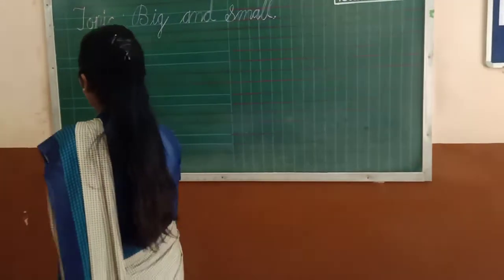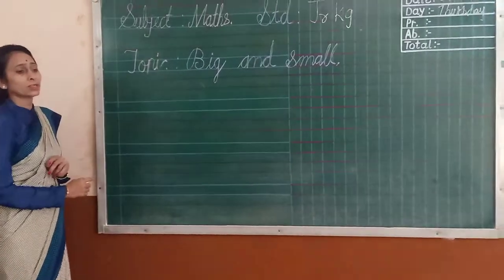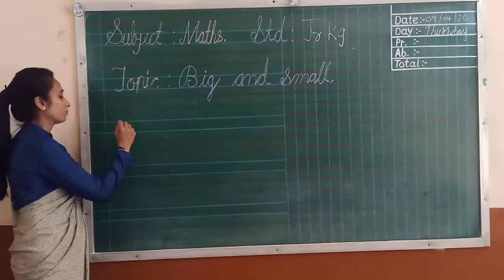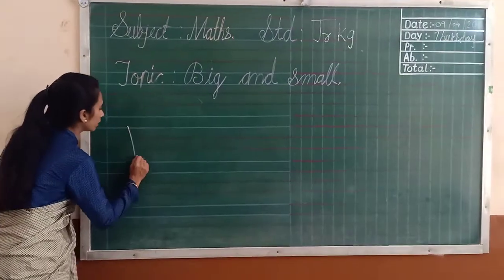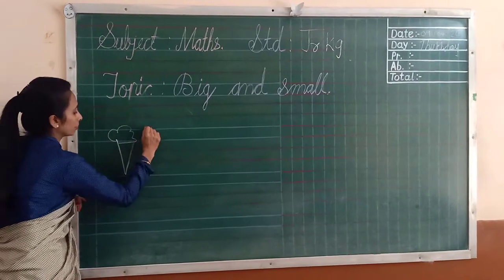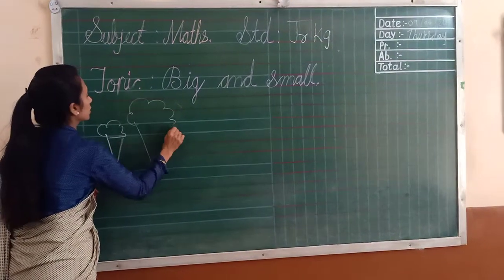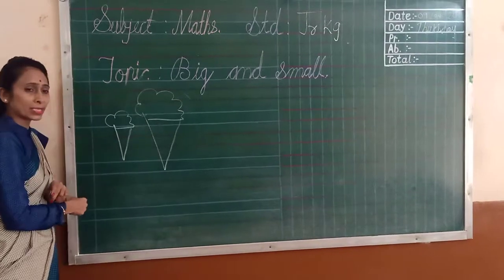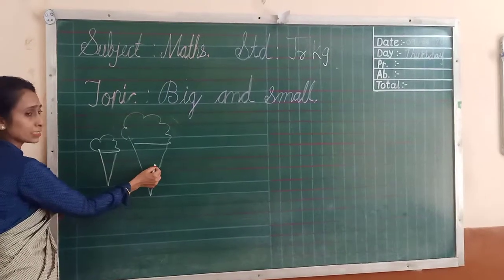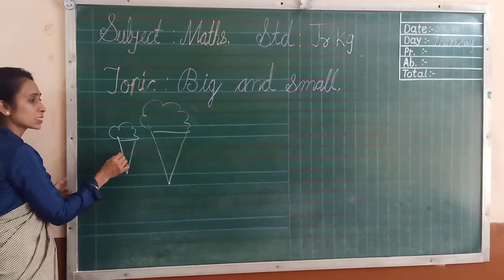Now students, look at the blackboard and identify the picture — which one is big and which one is small. In these two pictures, which one is small? In these two pictures, which one is big? Yes, this one is big and this picture is small.